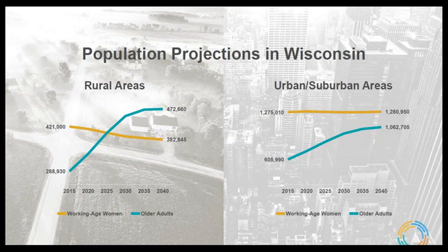Younger working-age people are leaving rural communities in search of economic and educational opportunities in more urban areas, but the rural population of older adults is growing quickly. So how will we ensure stable home care for older adults and people with disabilities? Demographic trends and tight labor markets pose challenges, but there are also opportunities to think creatively and boldly to ensure high-quality, stable care for home care consumers today and in the future.